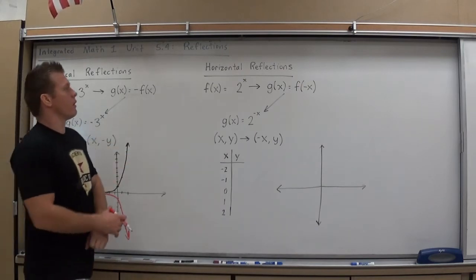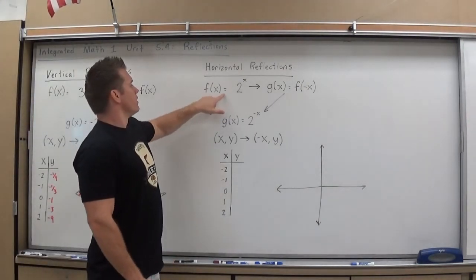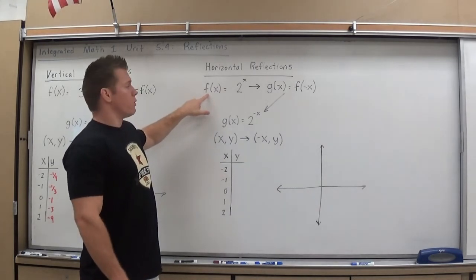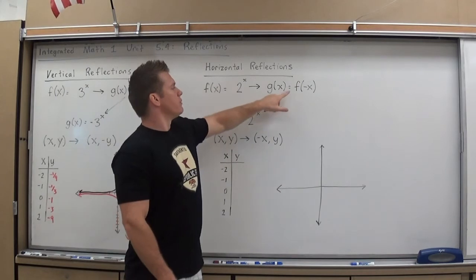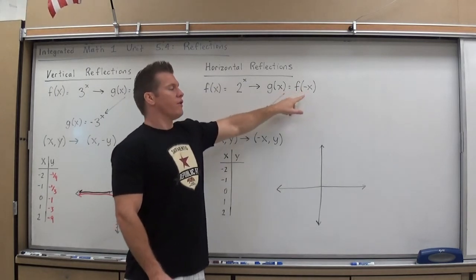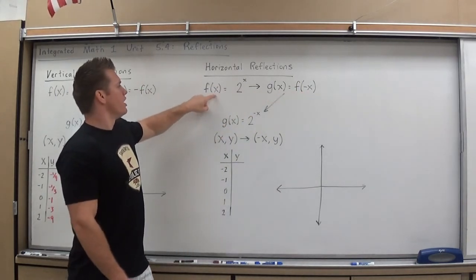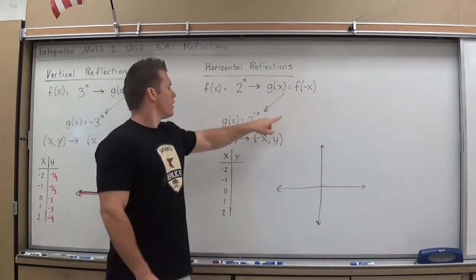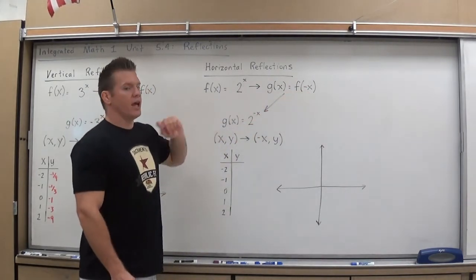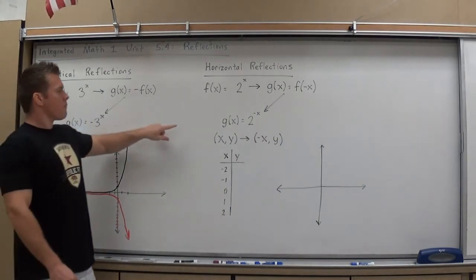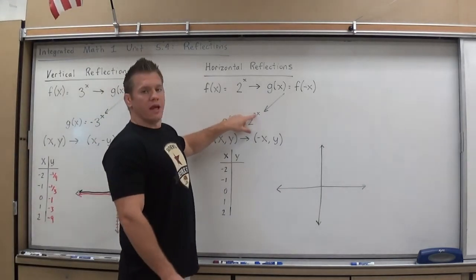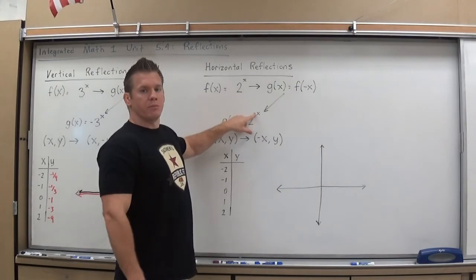Let's take a look at horizontal. In a horizontal reflection, what's different is if you had f of x and you want to do a horizontal reflection, you're actually going to just change the sign of the inside x. So g of x becomes f of negative x, the same exact function only changed the x to a negative. So that would become 2 to the negative x. So in vertical, the negative is outside the main function. In a horizontal, the negative is actually attached to the input variable x.